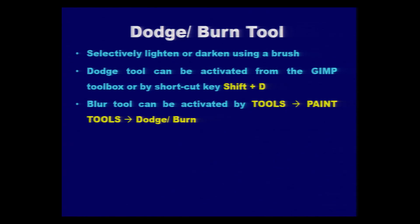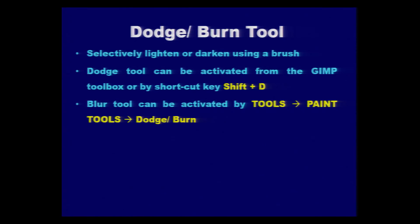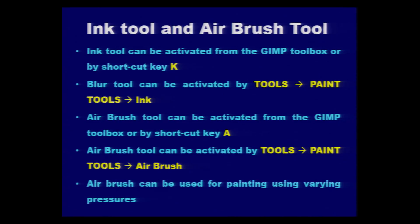Another popular image editing tool is the dodge or burn tool. It is used for selectively lightening or darkening an area using a brush. The brush size can be chosen according to requirement. The dodge tool can be activated from the GIMP toolbox or by using the shortcut key Shift+D. Most of the tools are available under the paint tools category in the tools menu. The ink tool can also be activated from the GIMP toolbox using the shortcut key capital K.